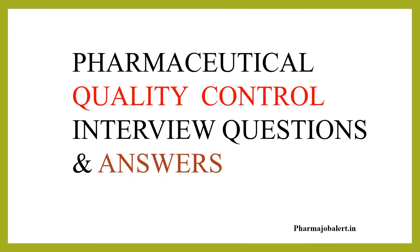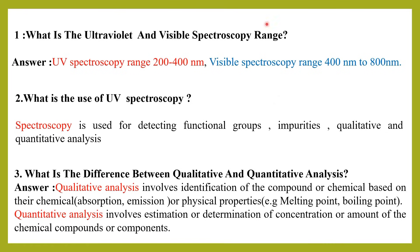Let us start your interview preparation. The first question: what is the ultraviolet and visible spectroscopy range? The UV spectroscopy range is 200 to 400 nanometers and the visible spectroscopy range is 400 to 800 nanometers.